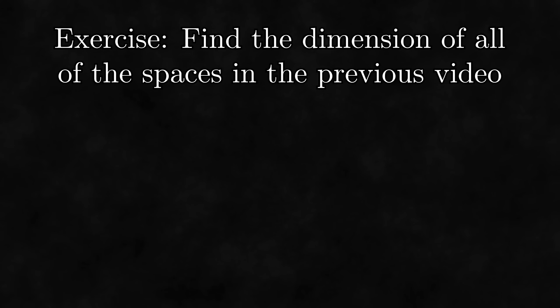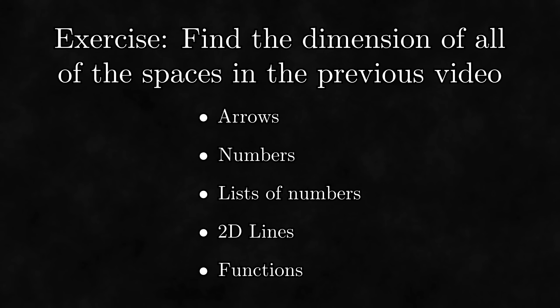With all of that out of the way, let's do an exercise. Go back to the last video about linear spaces and find the dimension of all of the examples there. Here are all of the linear spaces that were presented in that video. We have been talking about the dimension of the linear space of arrows throughout this whole video, so let's skip that one. Now some of these examples actually cover multiple spaces of different dimension, so in those cases, try to figure out what dimension each individual space has. Please pause the video and do this before continuing.